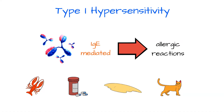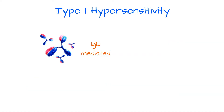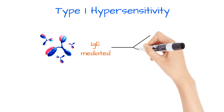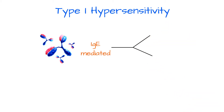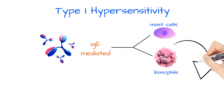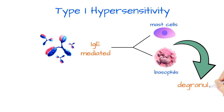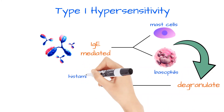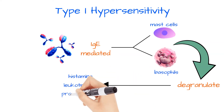It doesn't always occur on the first exposure to the antigen. In this reaction, a large amount of IgE antibodies are produced and then attached to mast cells and basophils. Those cells then begin degranulating, which releases short-acting mediators such as histamine, leukotrienes, and prostaglandins. This can cause both local and systemic effects.